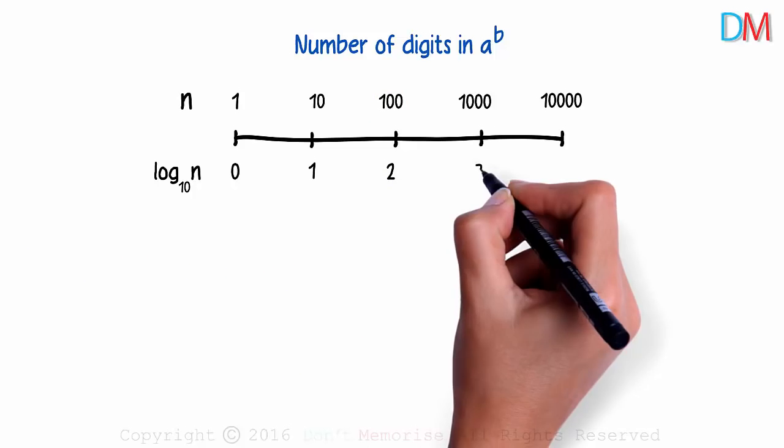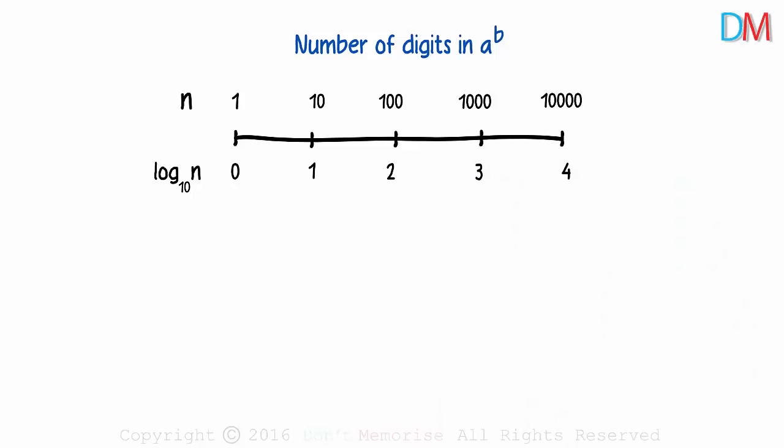And similarly, we have 3 and 4 here. Now the important question is, why did we do this? Let's see.